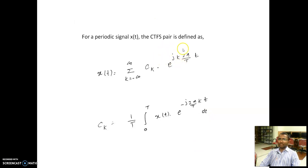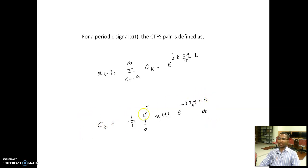This is a linear combination of harmonically related complex exponential functions. This c_k expression, if you remember, we derived in class using the orthonormality property of the complex exponential function.